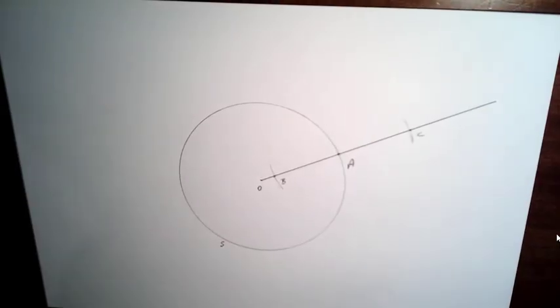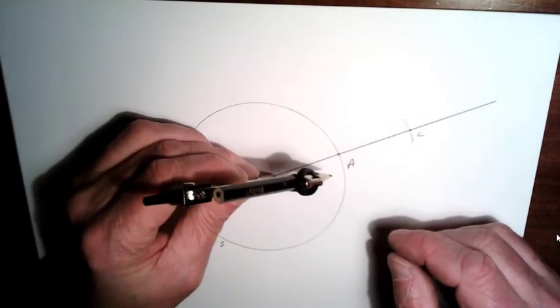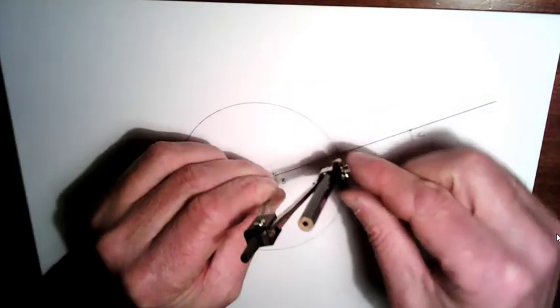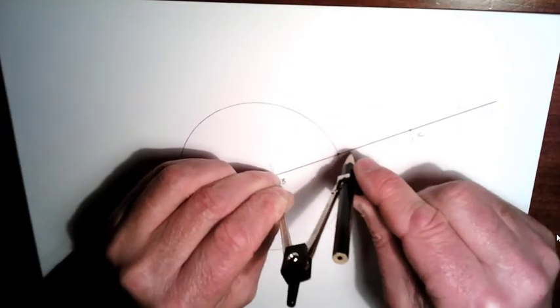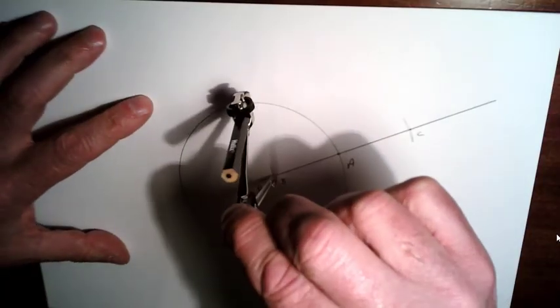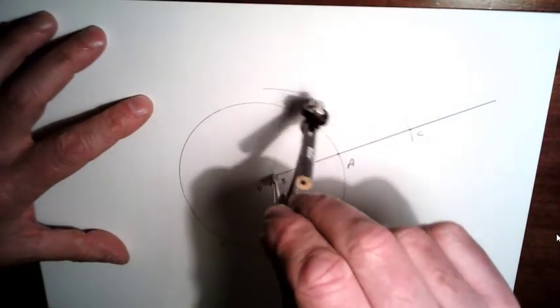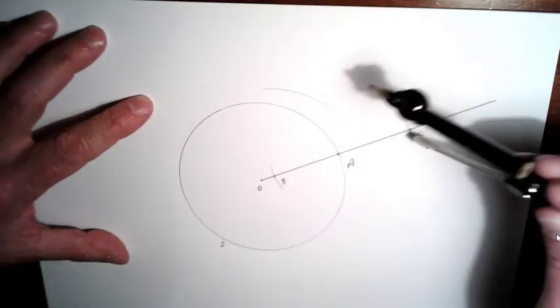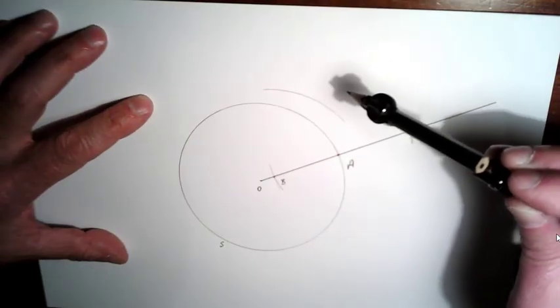And what we're going to do then is take our compass, put it at B, bring our pencil just more than halfway out along here, and draw an arc up here, bring it out to C, and do the same thing again.